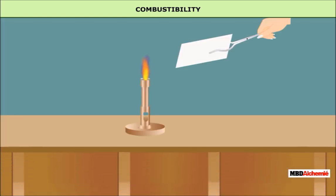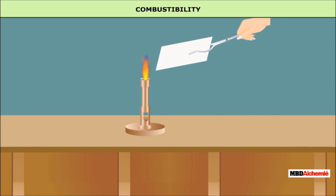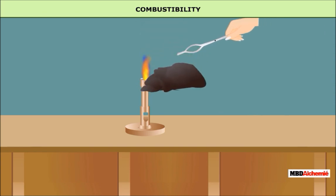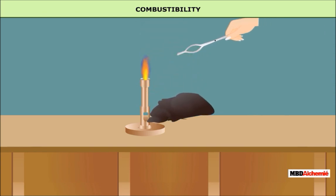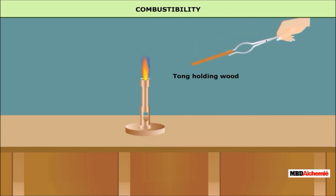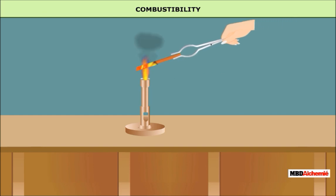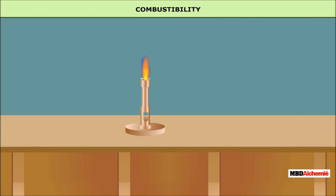Combustibility. Materials that can burn easily are called combustible materials. For example, paper, wood, cloth, and wax are combustible materials because they catch fire easily, while an iron wire is a non-combustible material because it does not catch fire.